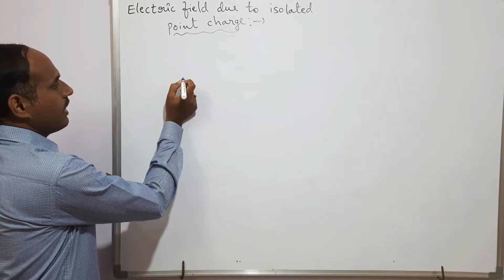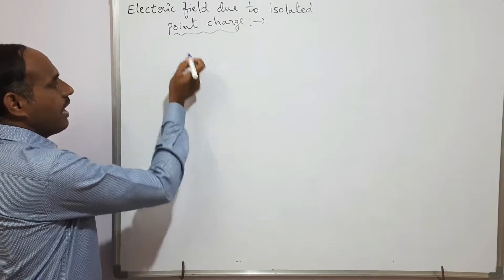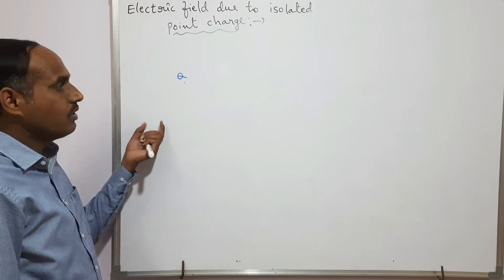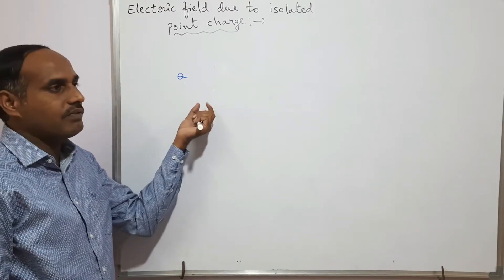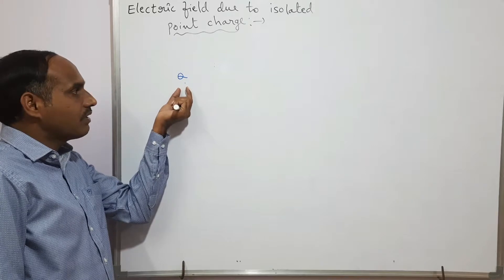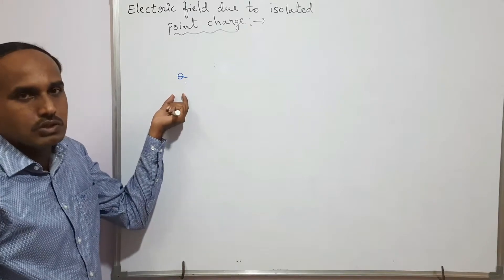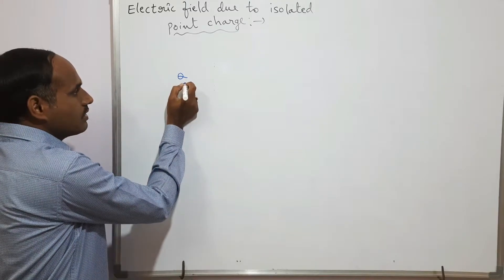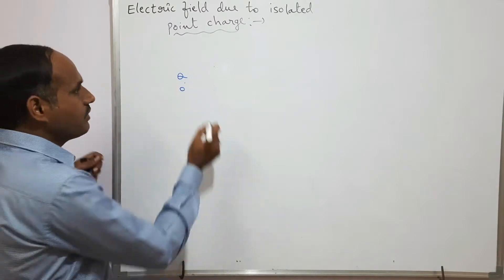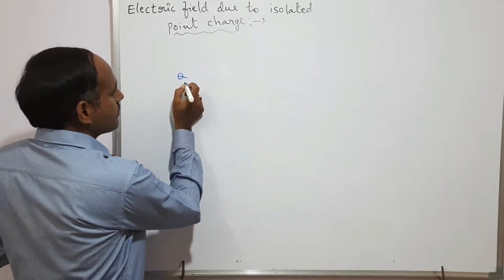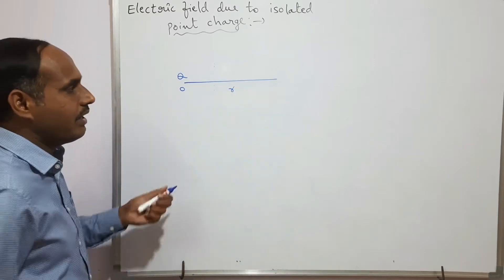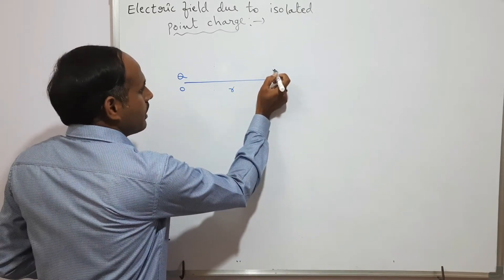Previously we discussed that whenever you place any charge at a certain point, some electric field is generated around it. Now we are going to find the expression for electric field strength at any point in the electric field generated by this charge. Here, this is the charge q which I am placing at point O.